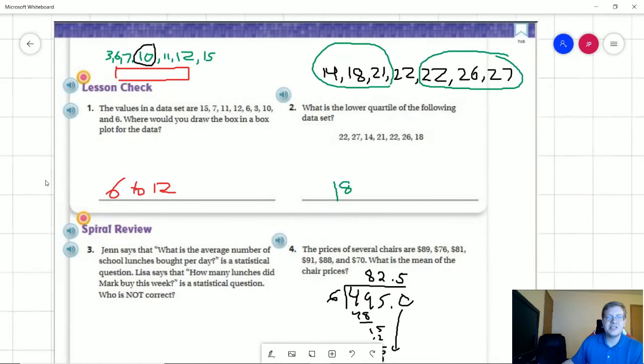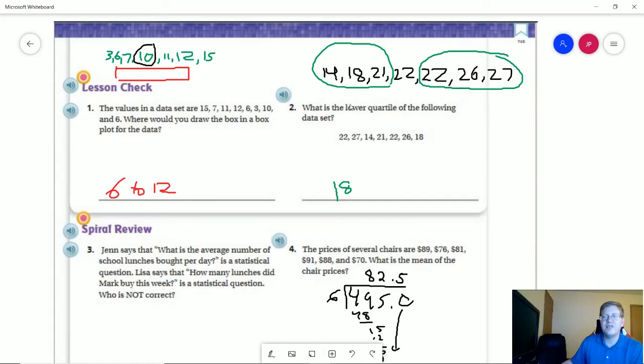Moving to the back, our box here is our median, and then our lower quartile would be the center number here, which would be 6. Our upper quartile would be the center number here, which would be 12. So our box would go from 6 to 12. Our lower quartile for number 2, again this is going to be our median, we're going to have three numbers on each side. The lower quartile would be 18.